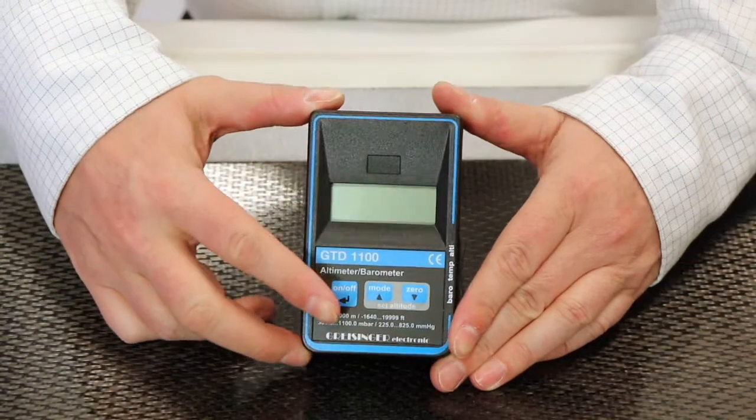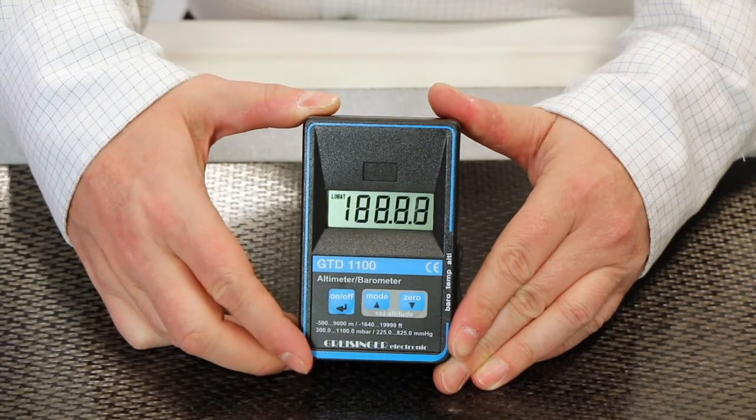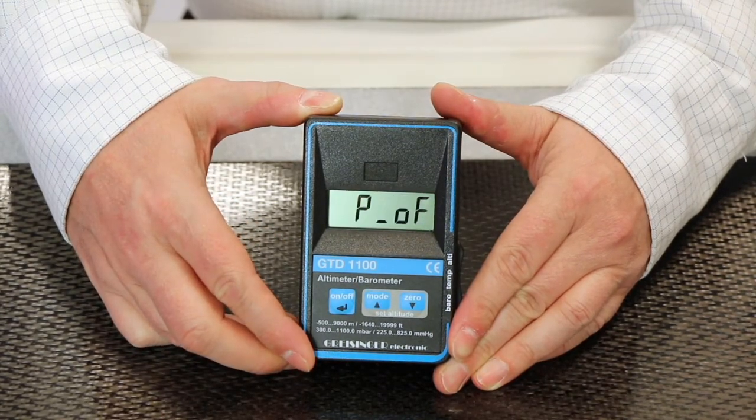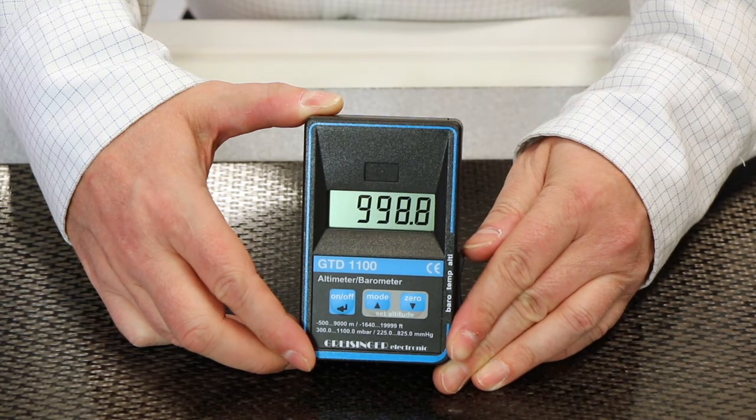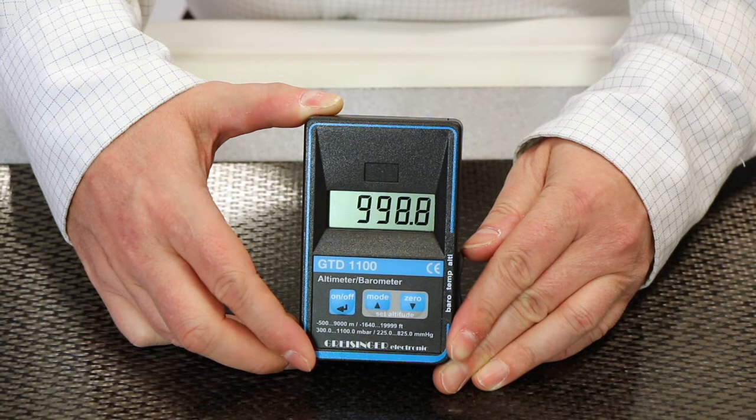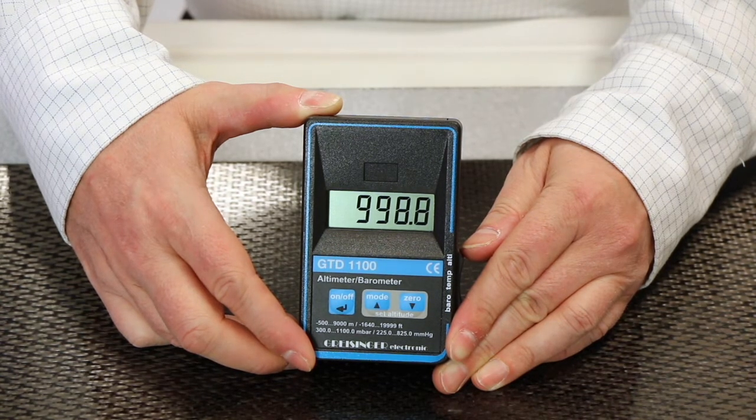When measuring with ion chambers, it is recommended that you compensate for temperature and pressure. Use a digital thermometer barometer to check the environment in your X-ray room. Save this compensation factor for calculating your final measurements.